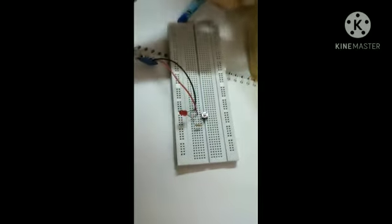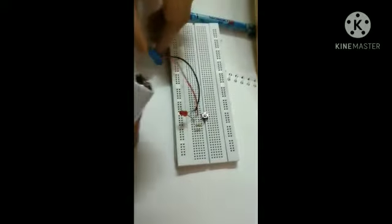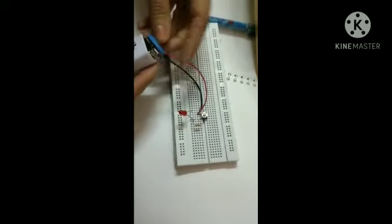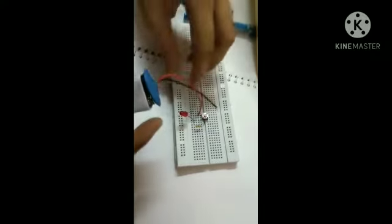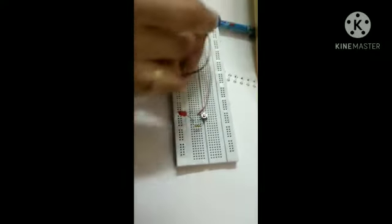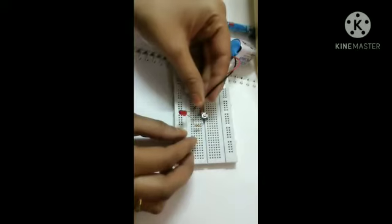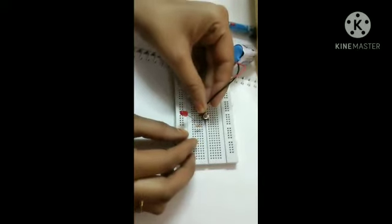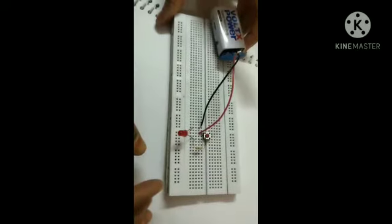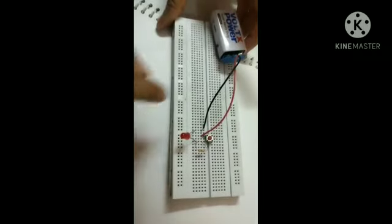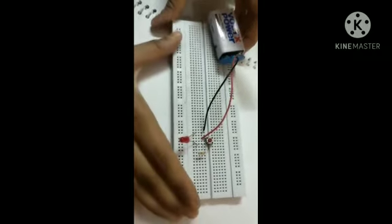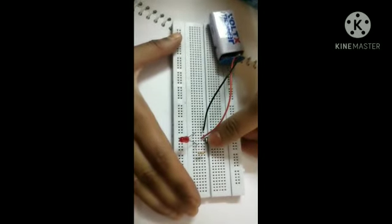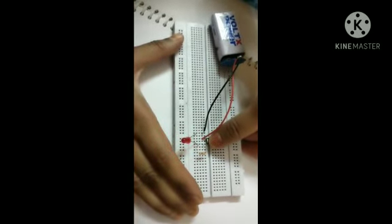Now, the last step: attach the battery with the battery clip. Now your circuit is complete. When you push the button, your LED will be on.